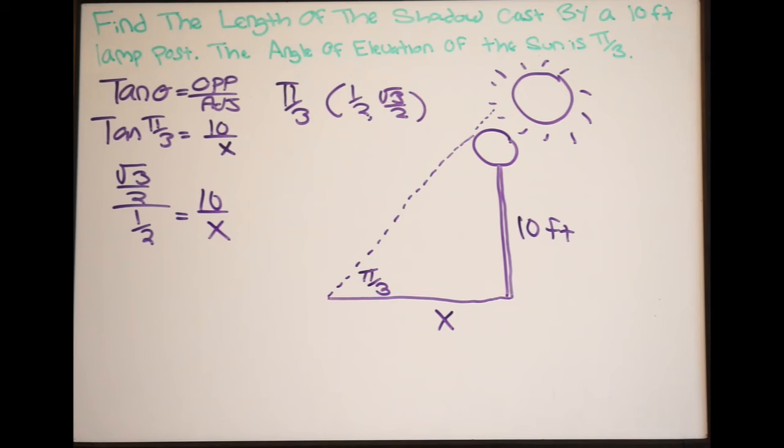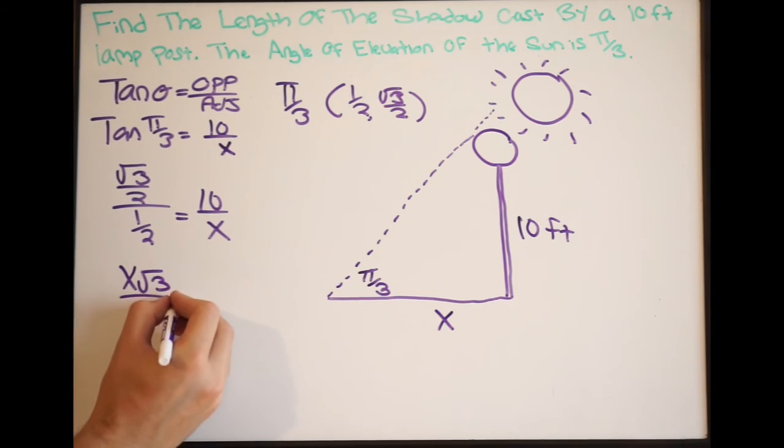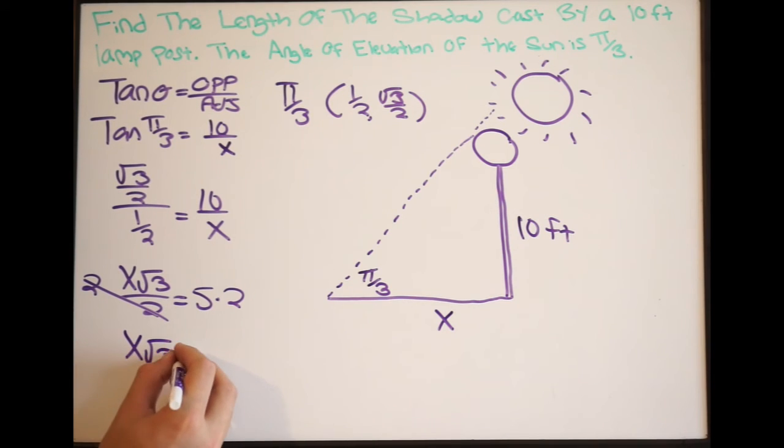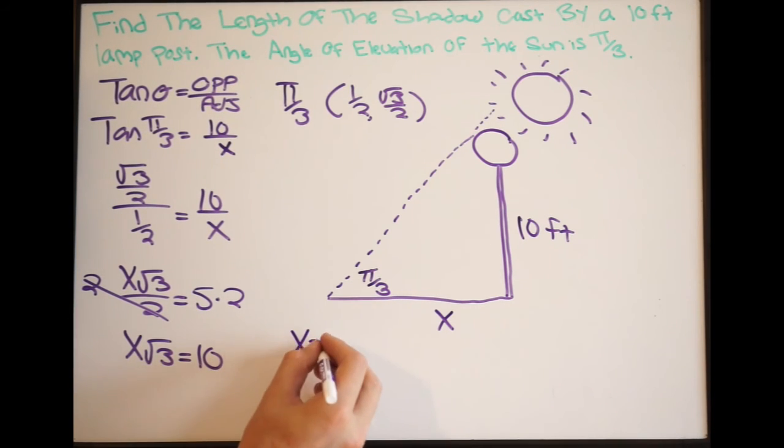So we don't even need a calculator for this. We can actually solve this just by cross-multiplying. So by cross-multiplying here, I'm going to get x square root of 3 all over 2 equal to, and a half times 10 is 5. And then just continuing on, we're going to multiply both sides by 2 here. So this cancels. We get x square root of 3 equal to 10. Our last step is going to be divide both sides by the square root of 3. And we're going to get x is equal to 10 over the square root of 3.